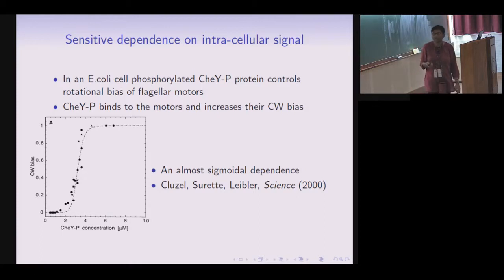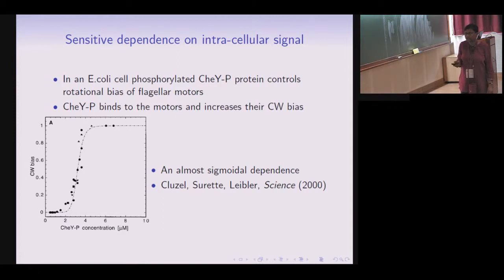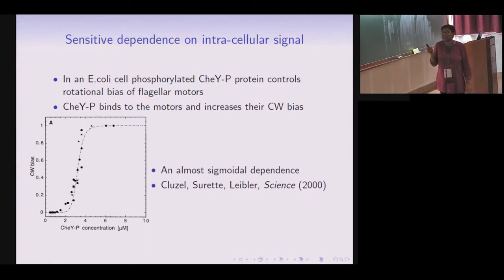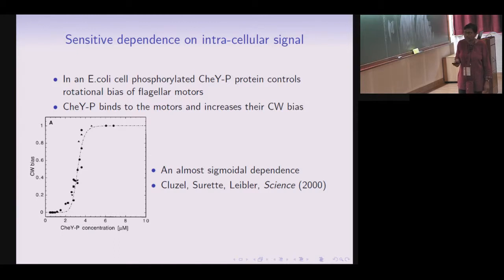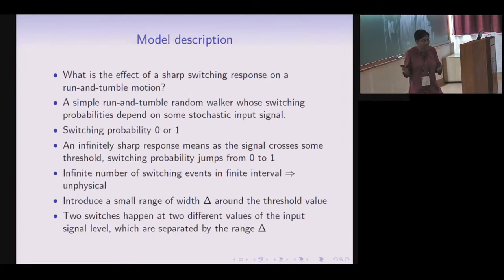The most well-studied organism is E. coli. Inside the E. coli cell there is a special protein called CheY-P (QIP) responsible for increasing the clockwise bias, causing the cell to tumble. Experimental data shows that CheY-P concentration plotted as a function of clockwise bias reveals a very sharp, almost sigmoidal dependence.